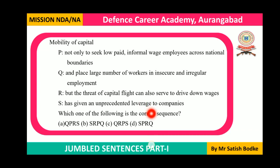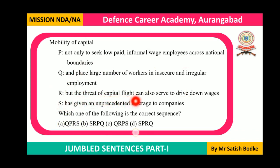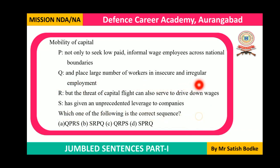The complete sentence: 'Mobility of capital has given an unprecedented leverage to companies not only to seek low-paid informal wage employees across national boundaries, but the threat of capital flight can also serve to drive down wages and place a large number of workers in insecure and irregular employment.' 'Drive down' (V1) and 'place' (V1) are both verbs joined by 'and.' Option D is the correct answer.